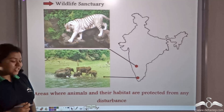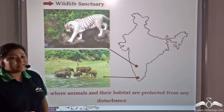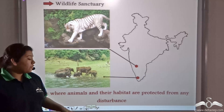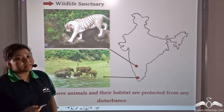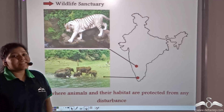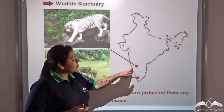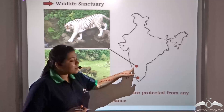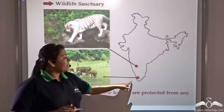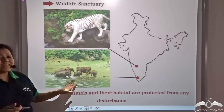A wildlife sanctuary is an area where animals and their habitat are protected from any kind of disturbance. Two of the most famous sanctuaries in India are the Bhadra Wildlife Sanctuary in Karnataka and the Periyar Wildlife Sanctuary in Kerala.